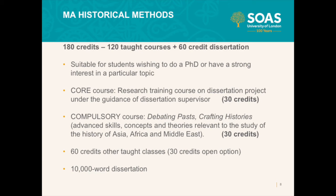The MA Historical Research Methods course has overlaps with the straight MA History but is for people who already have a clear history research project in mind. It has been developed particularly for students who really want to do an MA as a stepping stone to a clear PhD program, though we also have students who don't necessarily want to go on and do a PhD but have a very clear project in mind for their career path.